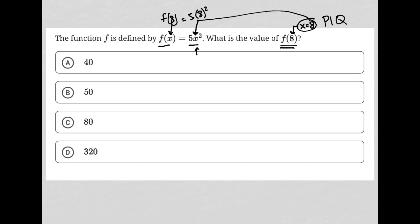So with 5 times 8 squared, of course I square the 8 before multiplying by 5. So 8 squared is 64, so this turns into 5 times 64. And 5 times 64 is 320.